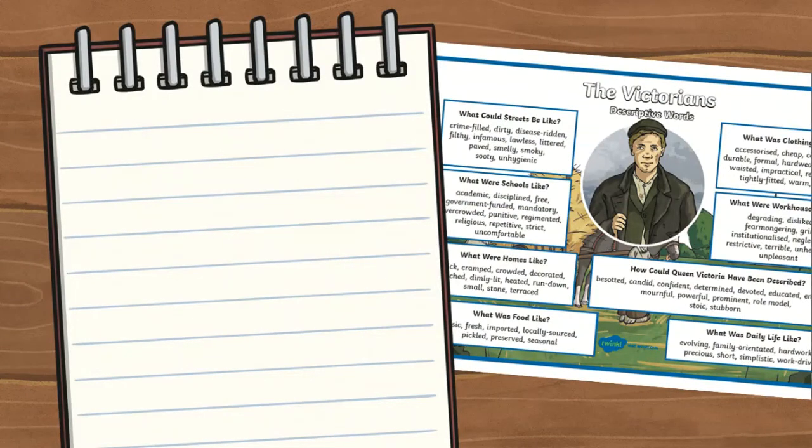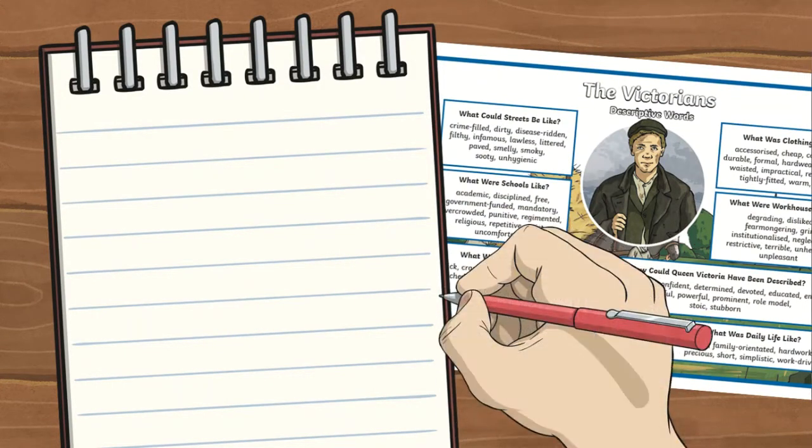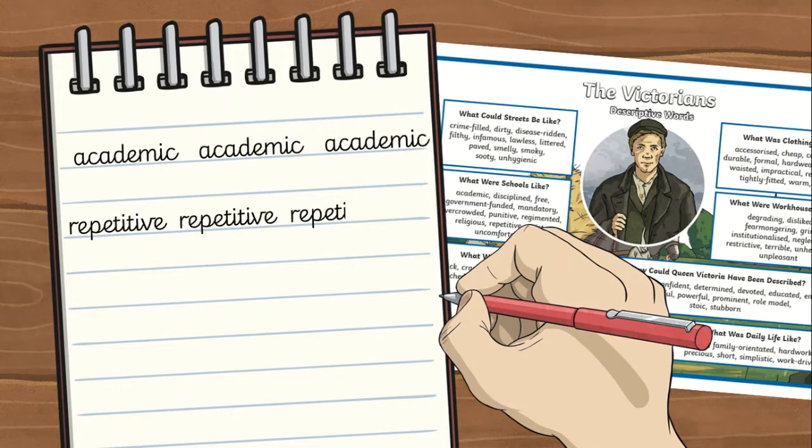These word maps can be used in different ways, such as handwriting practice. Children can practice words with tricky joins that they may need to work on, or words you've assigned. This way, children practice their handwriting while becoming familiar with a wide range of vocabulary.